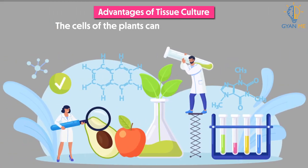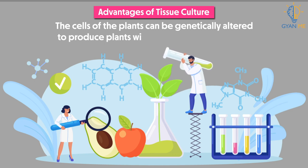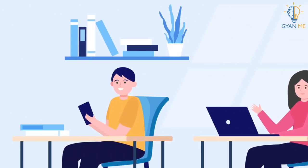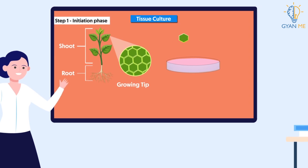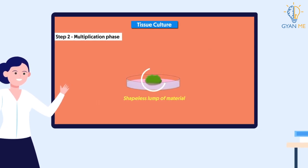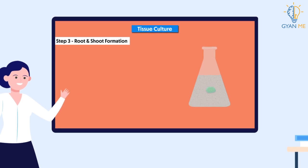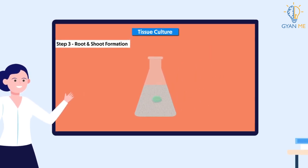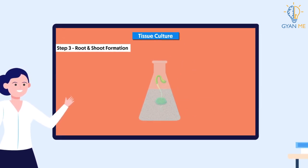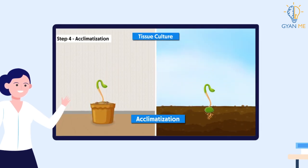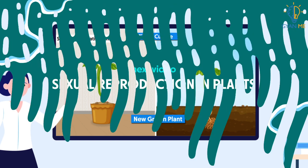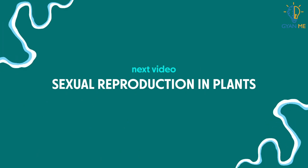In summary, a growing part of a plant is transplanted onto a nutritive medium where it grows into an undifferentiated mass of cells called callus. This callus is then transferred to another medium containing specific growth hormones, which initiate and promote root and shoot development. The resulting plantlet is then planted in soil to grow and mature into a new individual plant — and this method is called tissue culture. In the next video, we will learn about sexual reproduction in plants.